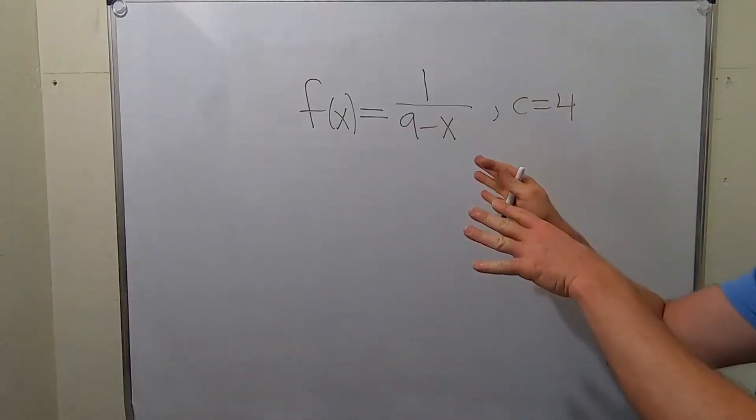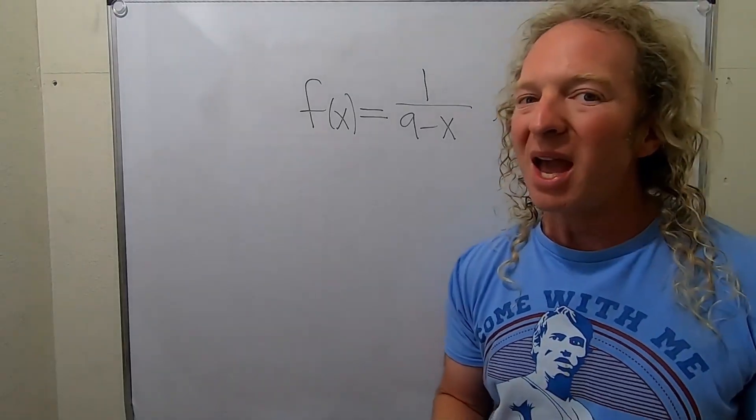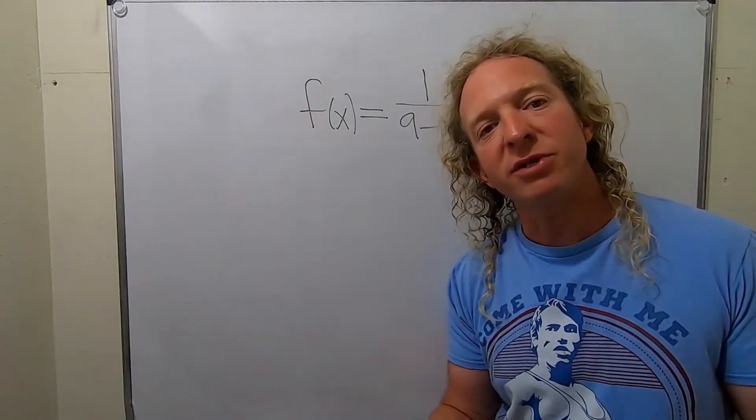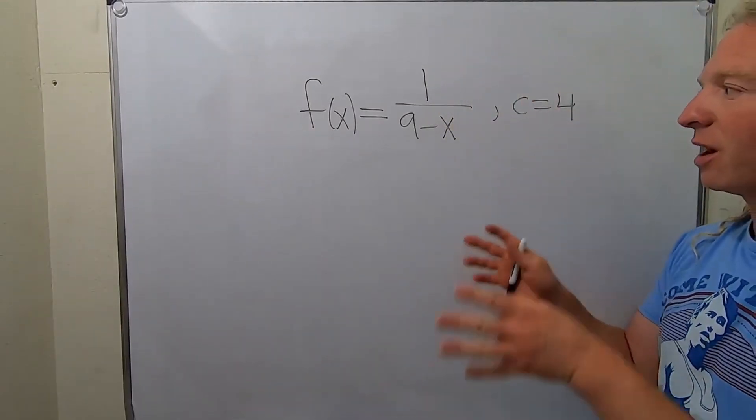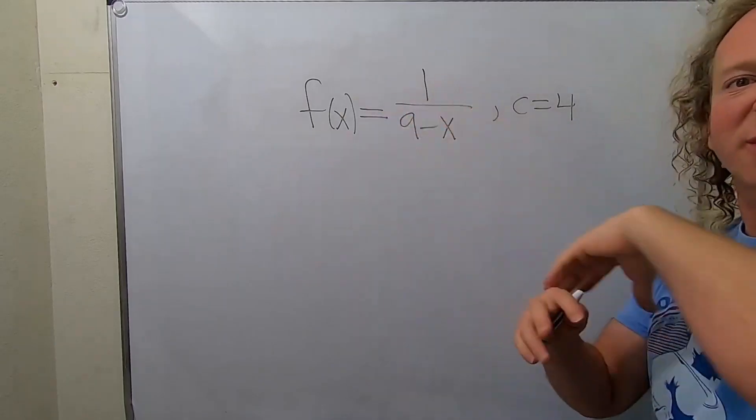In this problem, we're going to find a power series representation for this function, centered at c equals 4. And we're also going to find something called the interval of convergence.